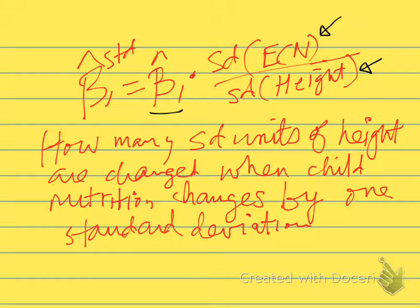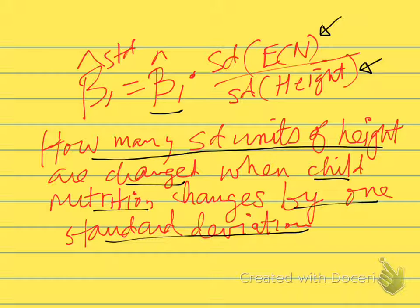So this standardized coefficient tells us how many standard deviations units of height are changed when child nutrition changes by one standard deviation. It's the effect of a one standard deviation in early child nutrition on standard deviations of height. How many standard deviations of height will be changed or are associated with the change of one standard deviation of early child nutrition.